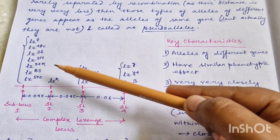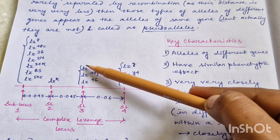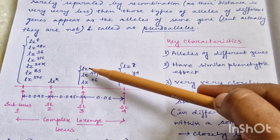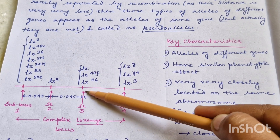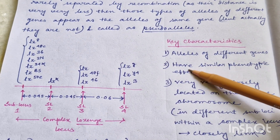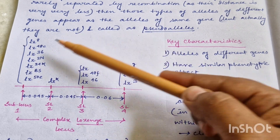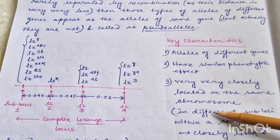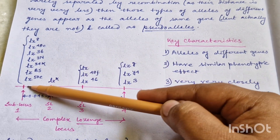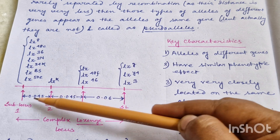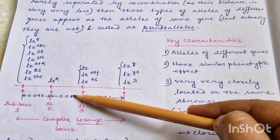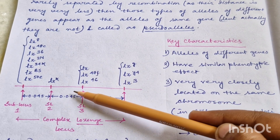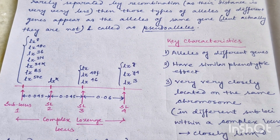Say LZ8 and LZ — these two alleles are actually alleles of different genes. LZ8 is the allele of the gene present at sublocus one, and LZ is the allele of the gene present at sublocus three. So they are alleles of different genes, but they have similar phenotypic effect. LZ8 and LZ show the similar phenotypic effect. They are very closely located on the same chromosome. Their recombinational distance is only 0.09.